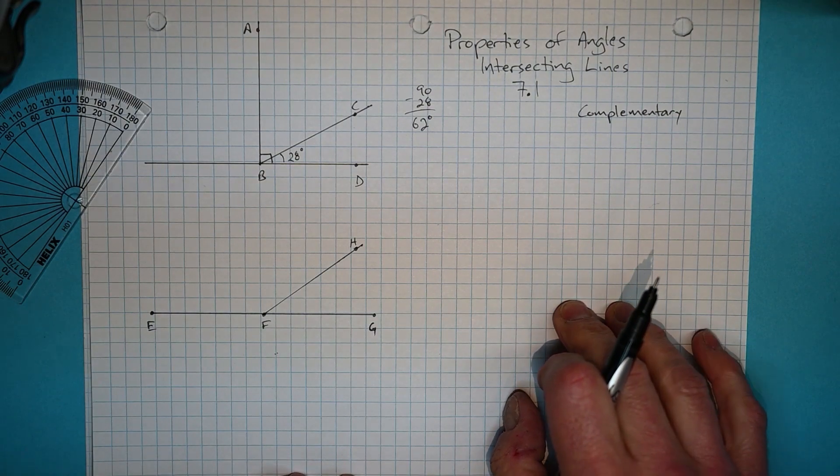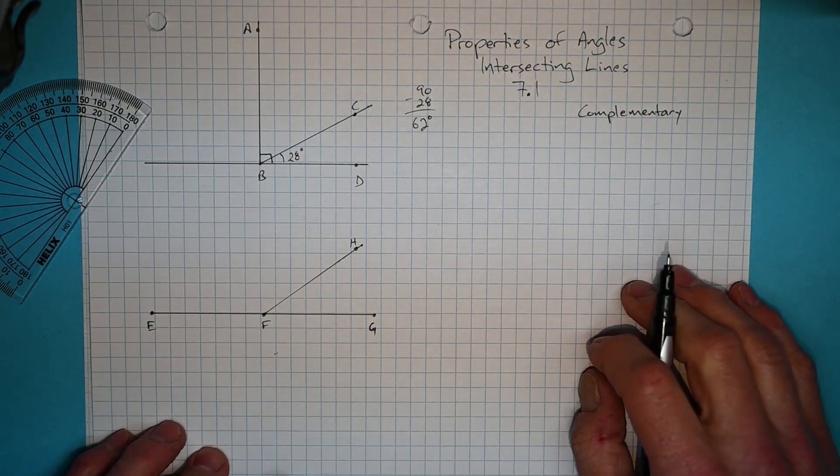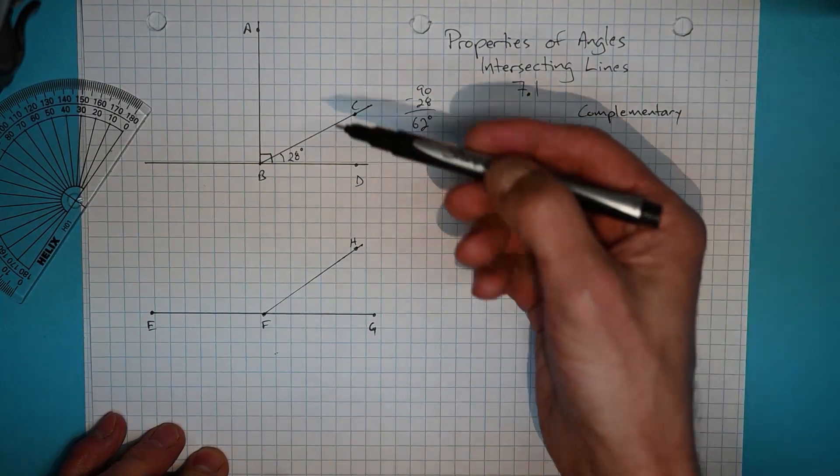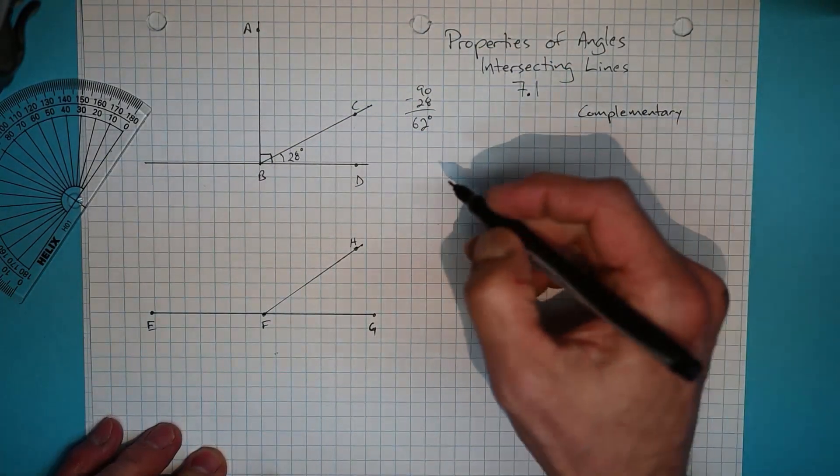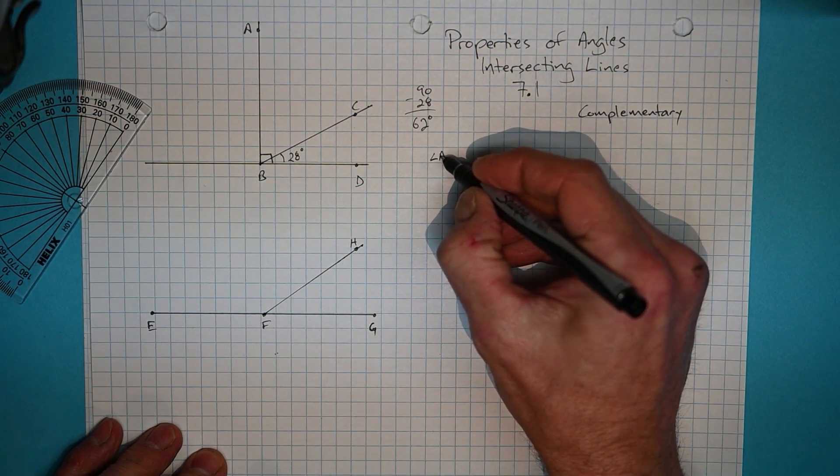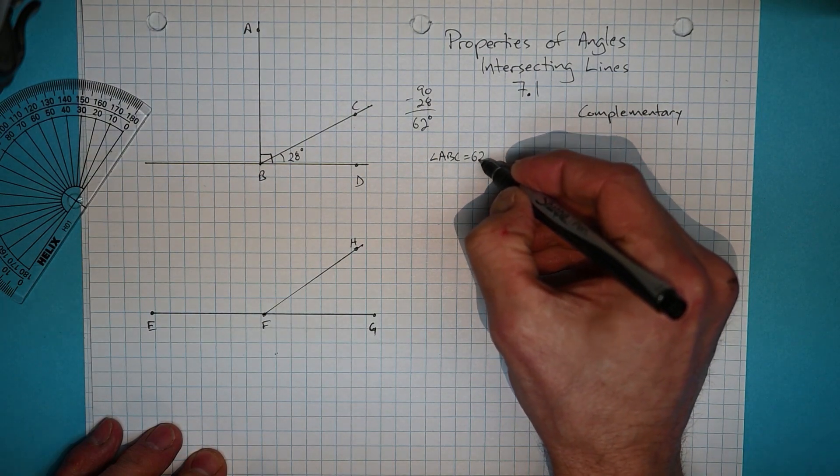Now we need to come up with good habits for showing our math thinking when we're doing these sorts of problems. So if you were asked to come up with angle ABC, you would show your thinking this way. So we know that angle ABC equals 62 degrees.